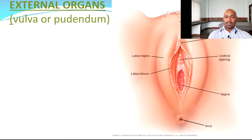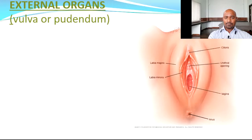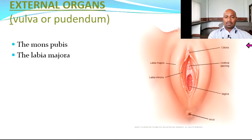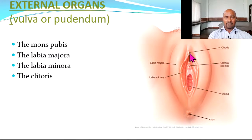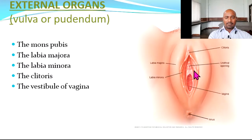Coming to the external organs — the external reproductive organs in the female are called the vulva or the pudendum. The region above the vaginal orifice which is elevated is called the mons pubis. The two lips surrounding the vaginal orifice are called labia majora, and the thinner inner hairless lips are called the labia minora. Where these two inner lips meet is called the clitoris. The vestibule of the vagina is the area between the two labia minora.